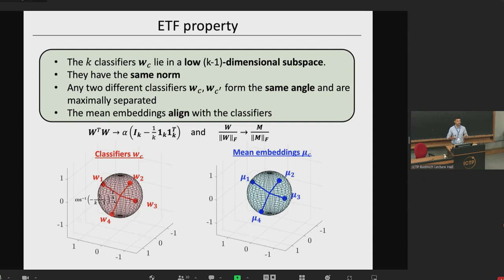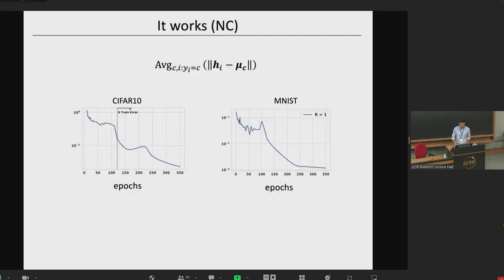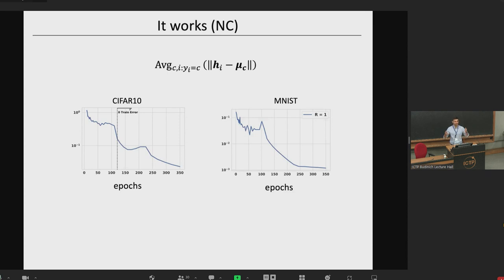These are the two properties — NC property and ETF property — which at this point are just formalizations, hypotheses. The authors formed appropriate metrics and tried to verify through experiments whether this holds. For the NC property, we look at the deviation of feature vectors H_i from their corresponding class mean, averaged over all examples and classes, and track how this metric evolves over training epochs. We do so for two datasets, CIFAR-10 and MNIST. This metric goes down over training, suggesting that embeddings converge to their mean as the network trains longer.